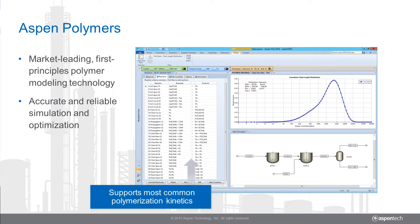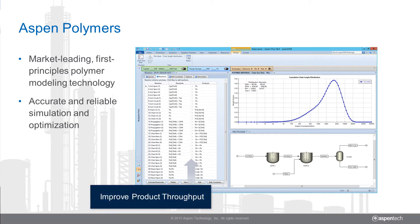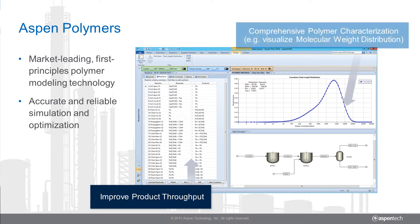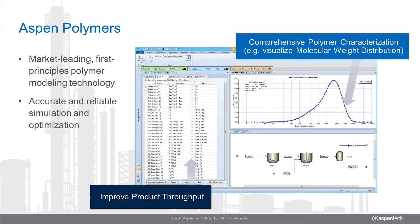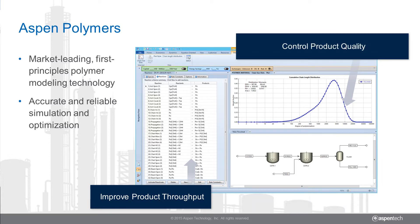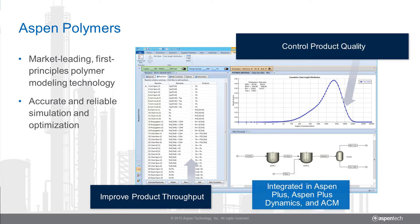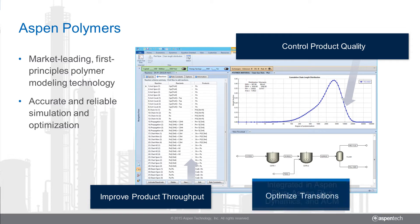Aspen Polymers supports most common polymerization kinetics, allowing you to improve product throughput, and offers comprehensive polymer characteristics such as molecular weight distribution to help you control product quality. Aspen Polymers is not only integrated with Aspen Plus but also with Aspen Plus Dynamics and Aspen Custom Modeler, allowing you to optimize transitions.